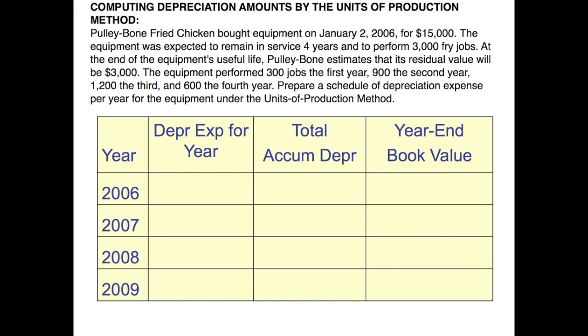So let's look at our example, our Pulley Bone Fried Chicken example that we saw in our earlier video with straight-line depreciation. This time we're using the units of production method to compute the depreciation expense for each year. So the first thing we do is to calculate the depreciable cost or the cost per unit under the units of production method.